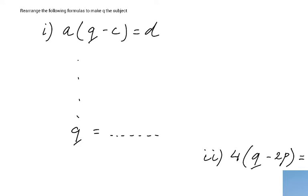Now there are several ways of doing it for this particular question, so you do whatever you want to do. But what I prefer is just to expand. Okay, so I'm going to expand those brackets: aq minus ac equals d. Okay, so that's my first step.